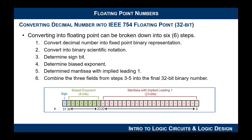So when you want to convert decimal into floating point, you can think of it as six steps. The first thing you want to do is take the decimal number and convert it into a fixed-point binary representation — you have the radix point, and you convert the whole number to the left and the fractional part to the right. Then you convert that into binary scientific notation so there's only one bit to the left of the radix point with an exponent. Then you determine the sign bit, then the biased exponent, then the mantissa with implied leading one, and finally you combine all three results into a final 32-bit binary number.